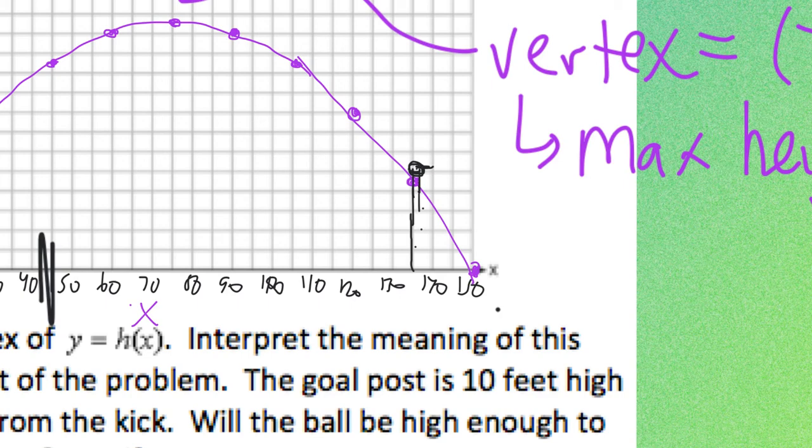So we can kind of try to visualize that. But we can see that just barely the football is a little too low. It would need to be a little bit higher than 10 at that point in order to score.